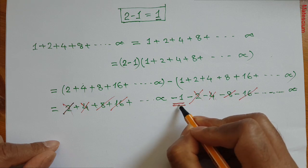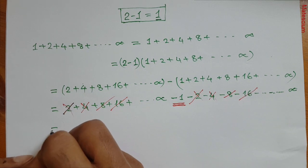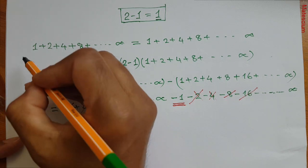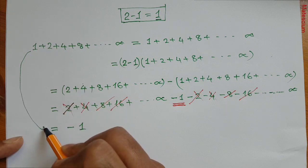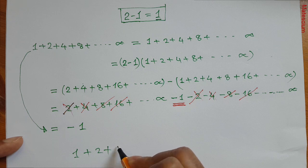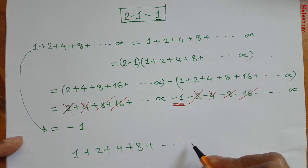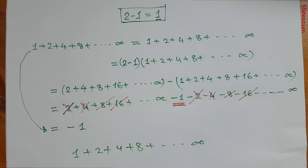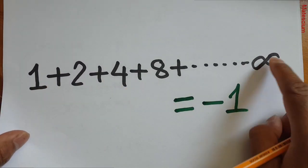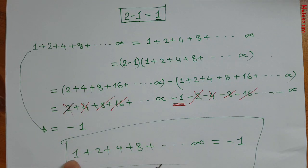Look here — only this minus 1 is remaining. That means the next line I can rewrite is minus 1. So what does that mean? This series is equal to minus 1. I proved that 1 plus 2 plus 4 plus 8 plus up to infinity — this infinitely long series — is equal to minus 1.